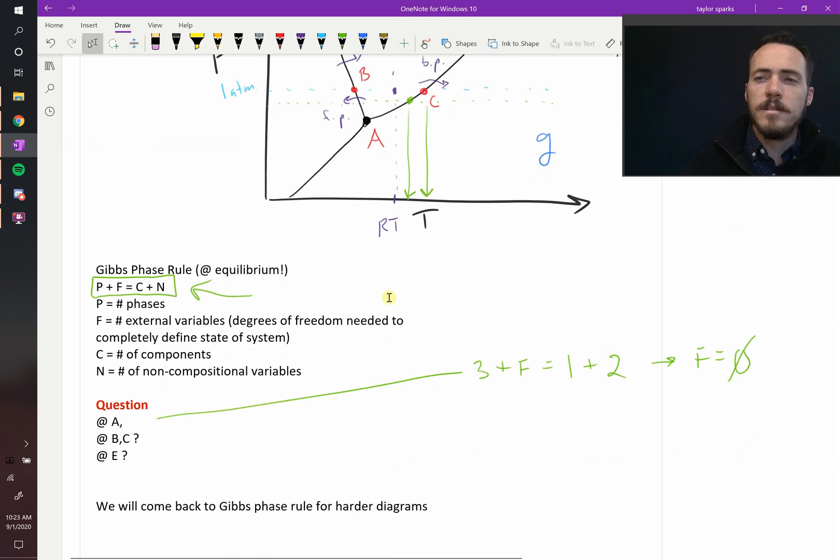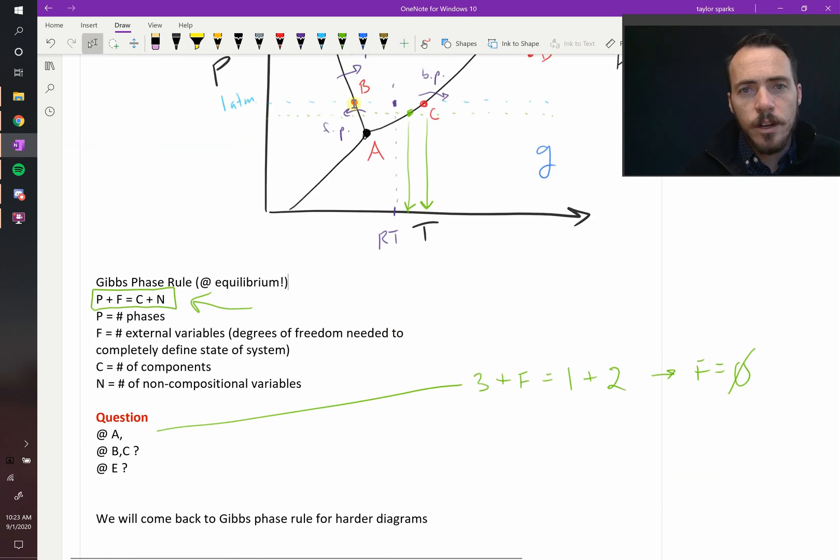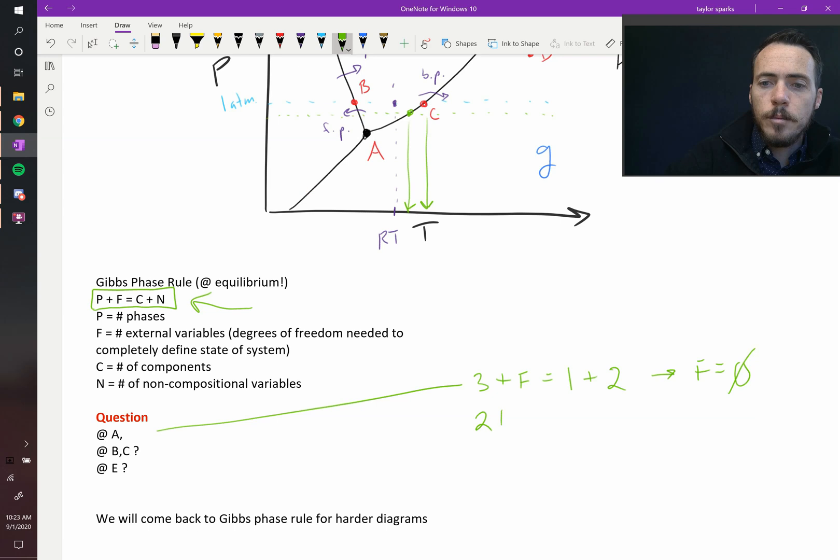Let's do another one. What about points B and C? Well, points B and C, that's right here along the melting point and the boiling point. So in each of those scenarios, there are two phases in equilibrium plus F. It's going to be equal to one plus two. So this time, F can be equal to one.